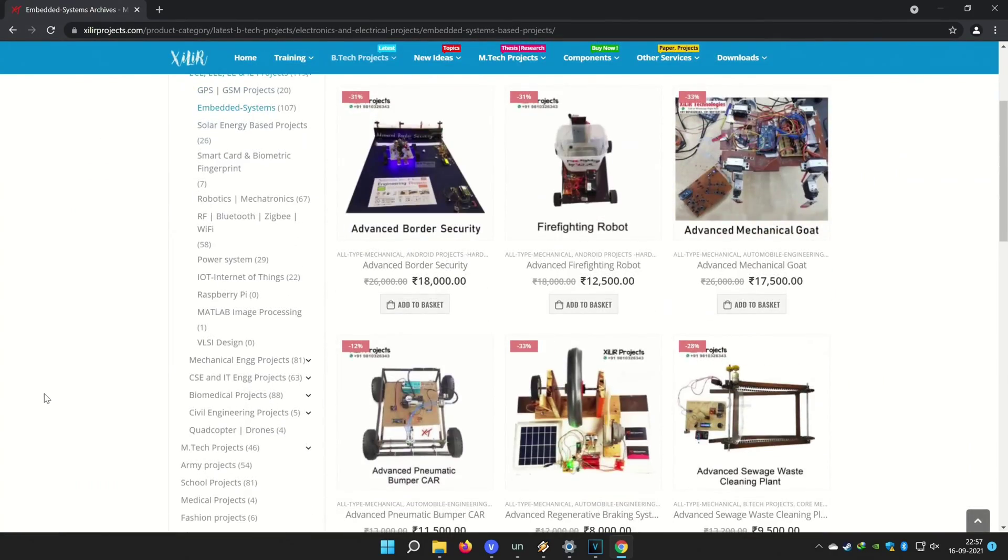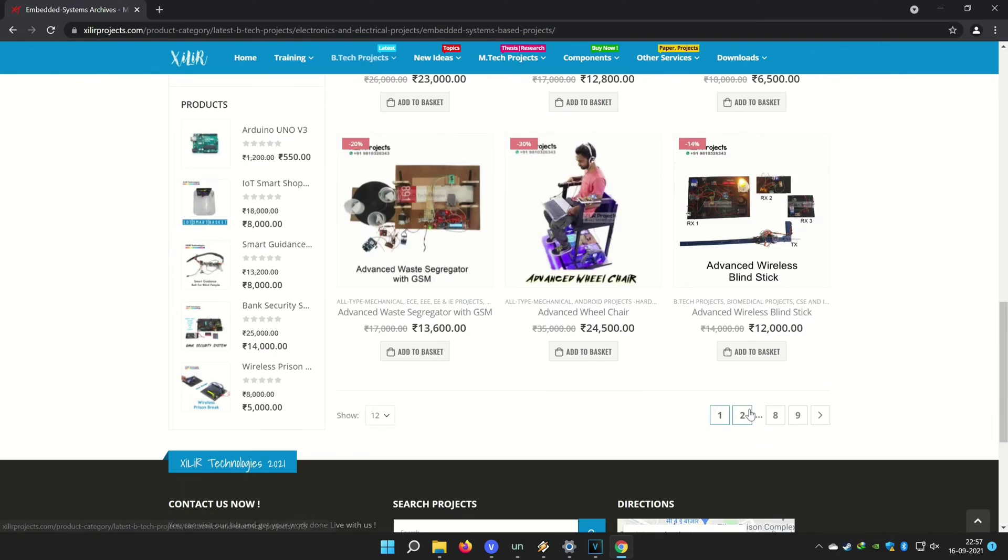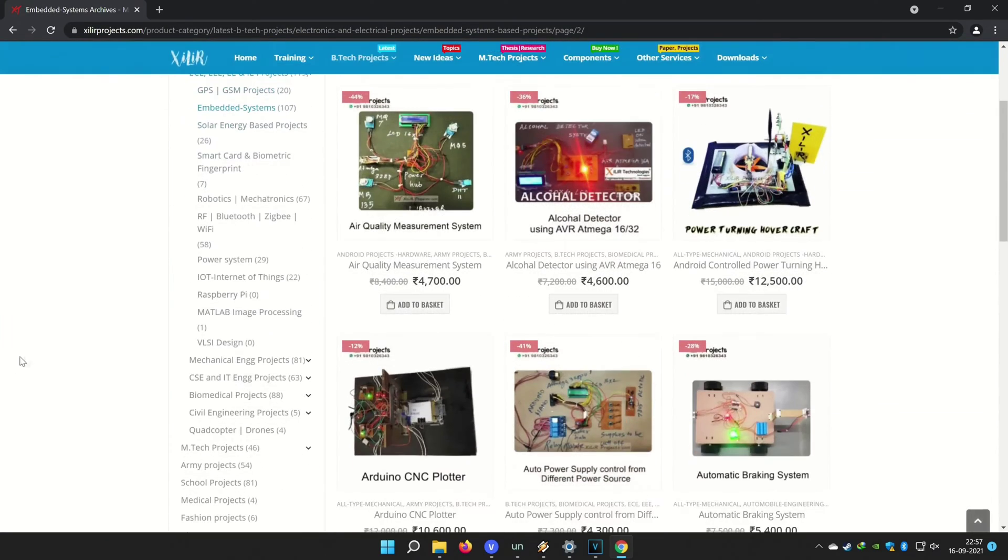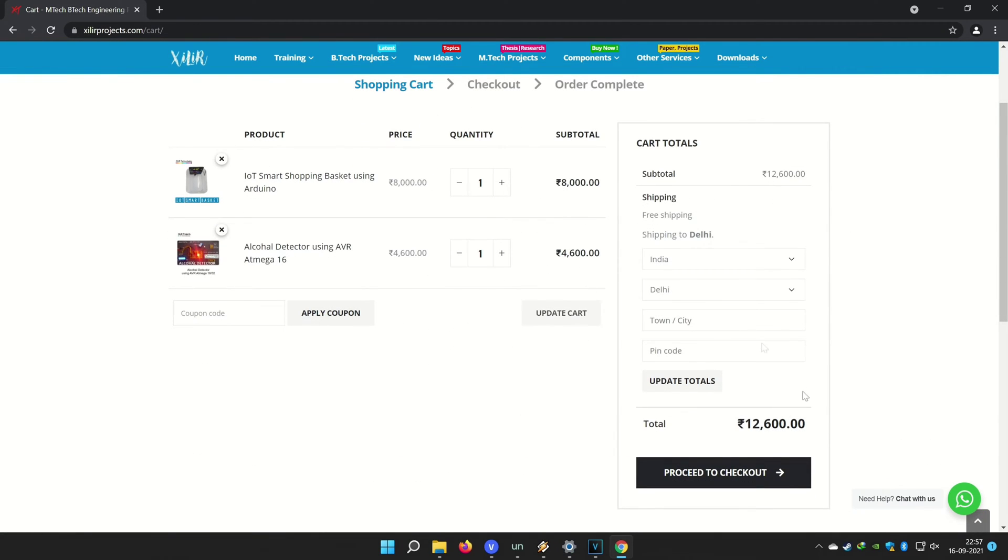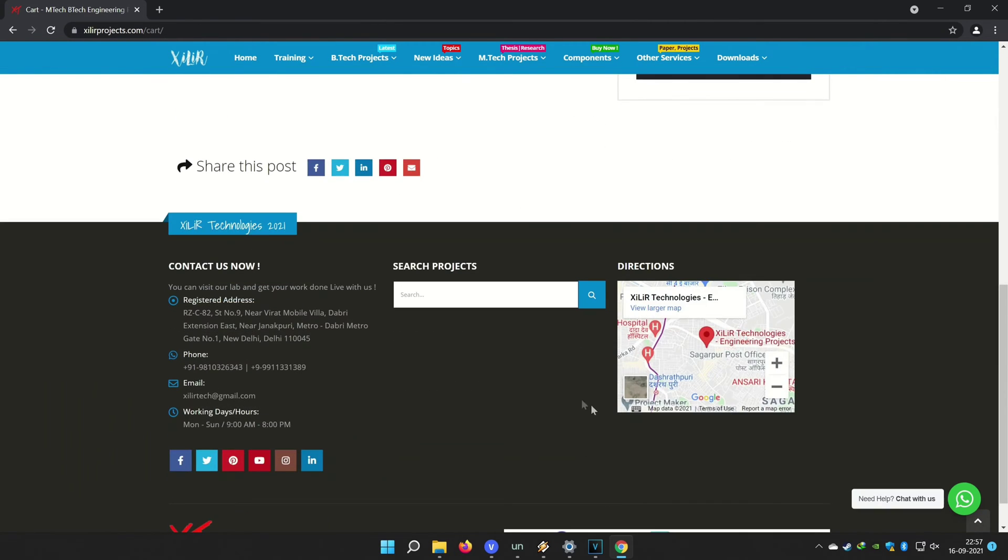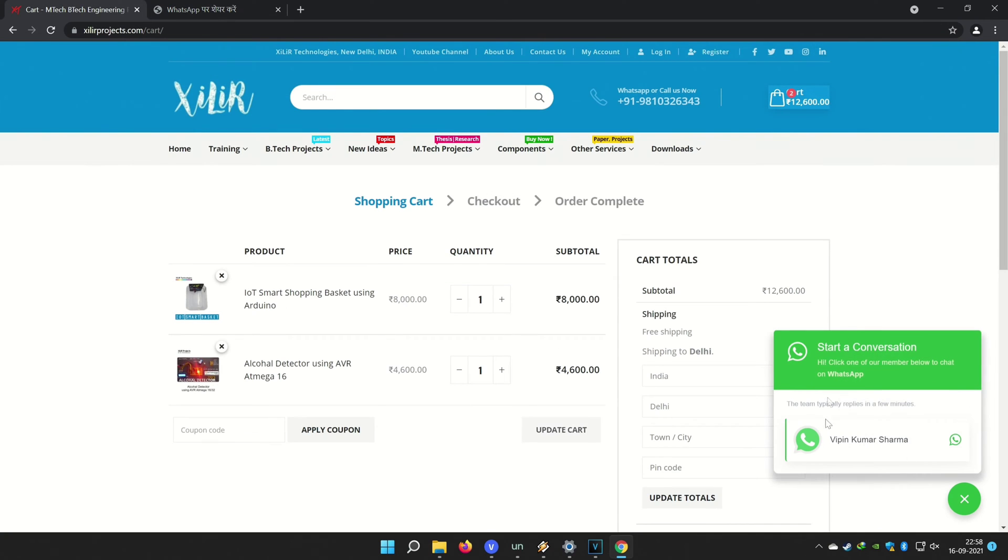You can buy project components from online or offline, both options are available. If you want to make something unique, new, creative just WhatsApp us on the number given in the description box. And guys thank you so much for watching the video. You can subscribe to this channel for more project ideas, tutorial videos, DIY videos, etc. Thank you so much.